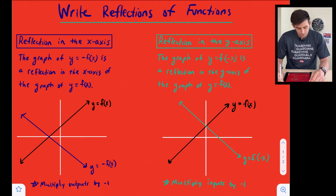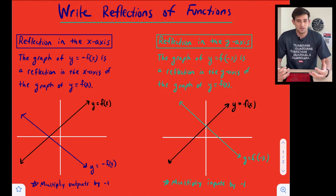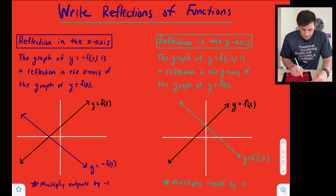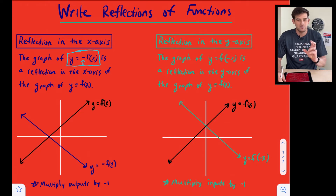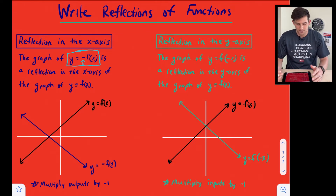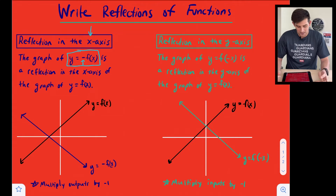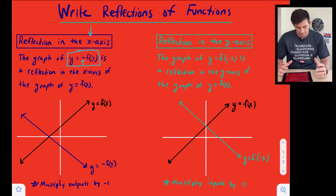Let's start with the x-axis. There is a way that the equation is going to look and a way that the graph is going to look, and we're going to focus on how the equation looks. The graph of y equals the opposite of f of x — notice where this negative sign is located: it is outside f of x. If you think about f of x, that would be the output values of our function, so we're making the output values opposite, or making y opposite. So we reflect over the x-axis, and this represents a reflection in the x-axis of the graph of y equals f of x.